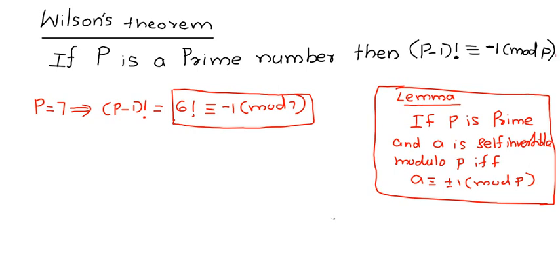The self-invertible least residues modulo p are 1 and p minus 1, because minus 1 is congruent to p minus 1 modulo p. In fact, minus 1 is congruent to n minus 1 modulo n for any n, so minus 1 is congruent to p minus 1 modulo p.